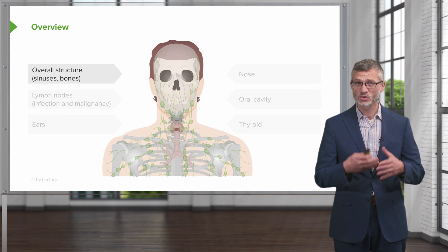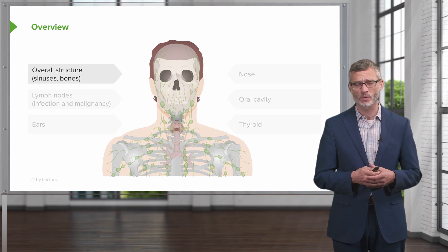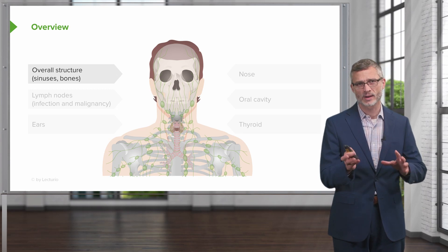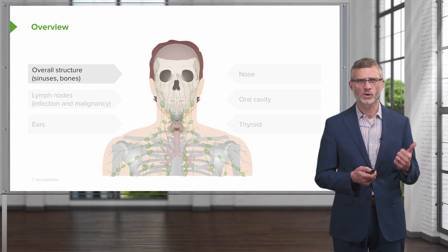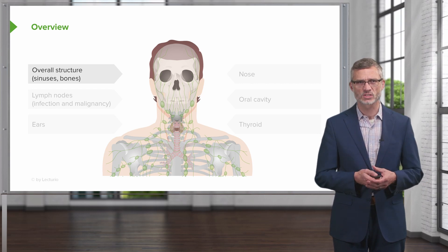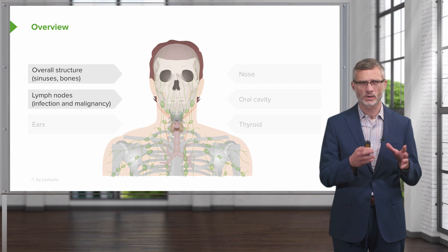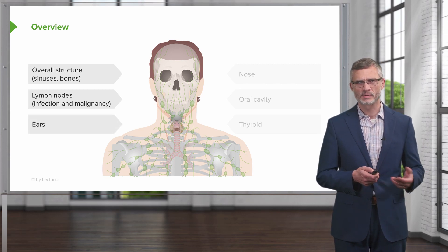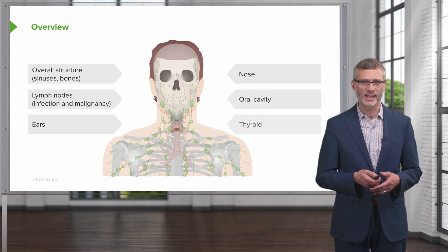However, we should really review the complete structure and anatomy of what we're going to be examining, because that may lead us towards thinking about some other etiologies as well. We're going to talk about the overall structure of the sinuses and the bones of the skull, review some lymph nodes, and how we can distinguish infection versus malignancy. We'll be examining the ears, the nose, the oral cavity, and the thyroid.